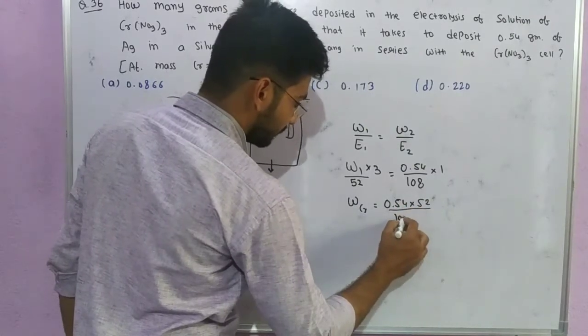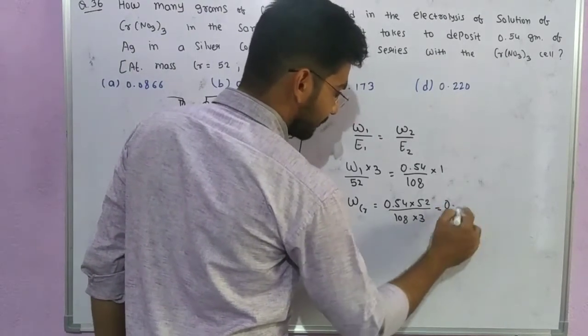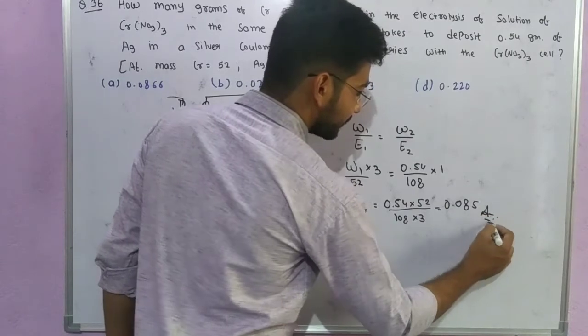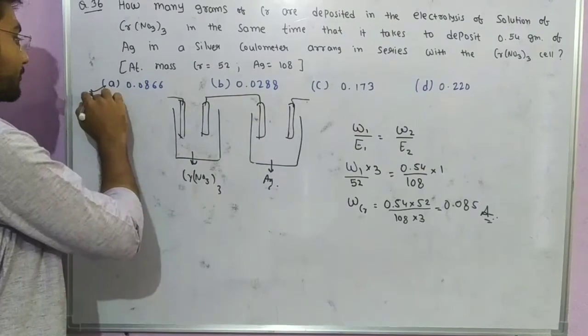Using the equivalent weight of silver and chromium in the formula, we get 0.54 times 52 divided by 3 times 108, which gives us 0.085 grams. So 0.085 is your answer, and checking the options, option A is the correct option.